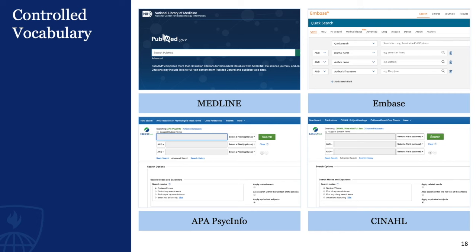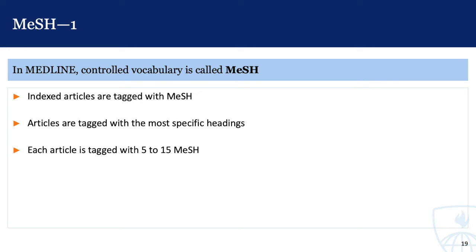To remedy this problem, databases such as Medline, Embase, APA PsycInfo, and CINAHL use a controlled vocabulary. In Medline, the controlled vocabulary is called MeSH.